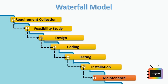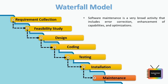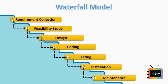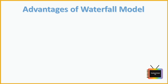The last and long-lasting phase of the waterfall model is the maintenance phase. This process continues until the application comes to an end. When customers start using the software they may have issues that need to be tested and fixed. The maintenance phase also includes changes in software and hardware to maintain operational effectiveness and improve performance.